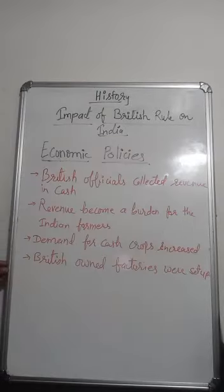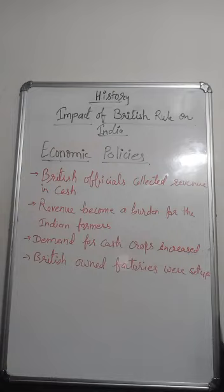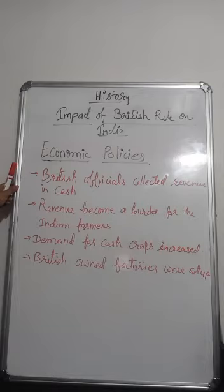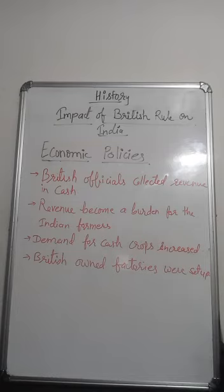Regarding economic policies: British officials collected revenue in cash. Revenue became a burden for Indian farmers. Demand for cash crops increased rather than food crops. British-owned factories were set up, and later many Indian-owned industries also came up. In the 19th century, Indian indigo was in great demand in Europe — it was very expensive and only the rich could afford it, known as the Royal Purple.